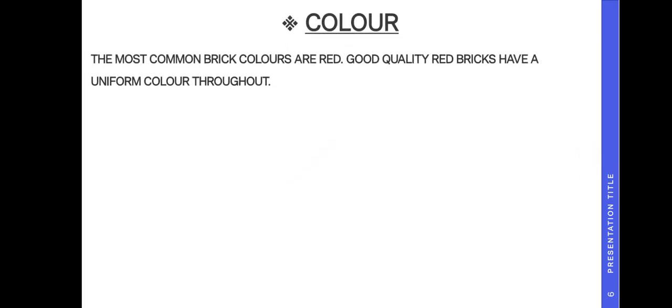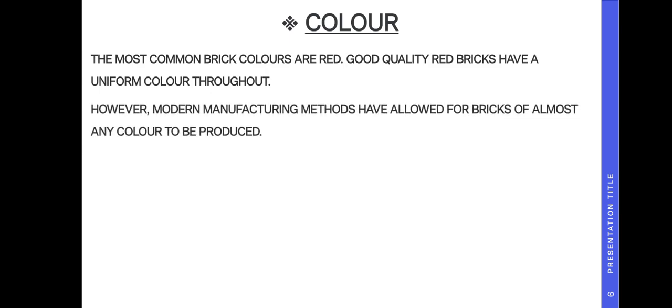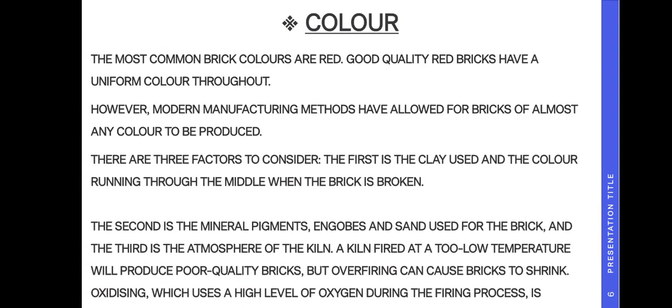The most common brick color is red. Good quality red bricks have a uniform color throughout. However, modern manufacturing methods have allowed bricks of almost any color to be produced. There are three factors to consider: the first is the clay used and the color running through the middle when the brick is broken; the second is mineral pigments and sand used for the brick; and the third is the atmosphere of the kiln. Firing at too low a temperature produces poor quality bricks, but over-firing can cause bricks to shrink. Oxidizing uses a high level of oxygen during the firing process.